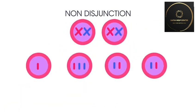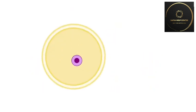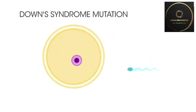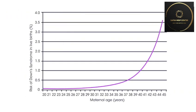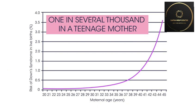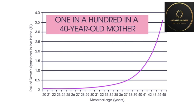Non-disjunction does occur with other chromosomes, but these usually result in miscarriage. This is less likely to happen with the 21st chromosome because it is relatively small. The Down's syndrome mutation appears to occur in the production of ova rather than sperm, and its incidence increases with the age of the mother. The chance increases from approximately one in several thousand in a teenage mother to one in 100 in a 40-year-old mother.